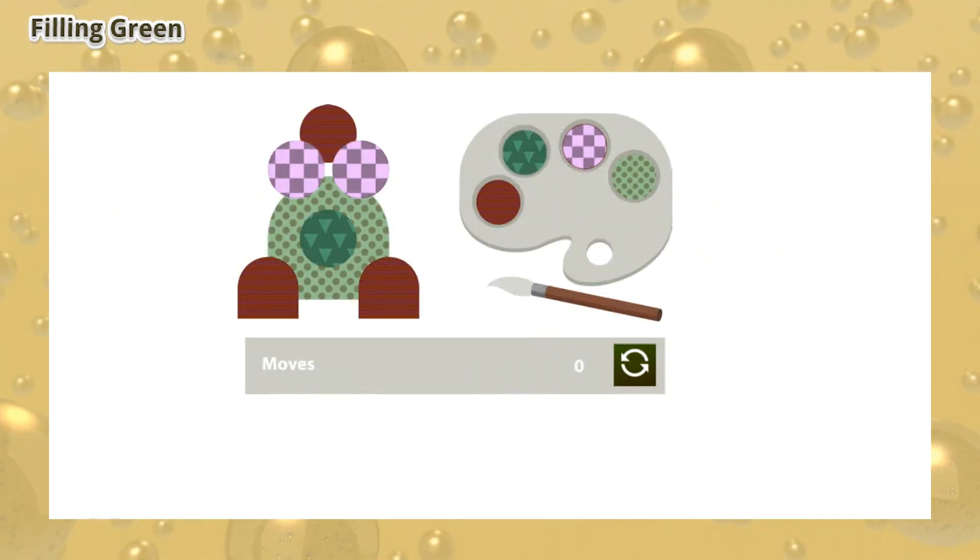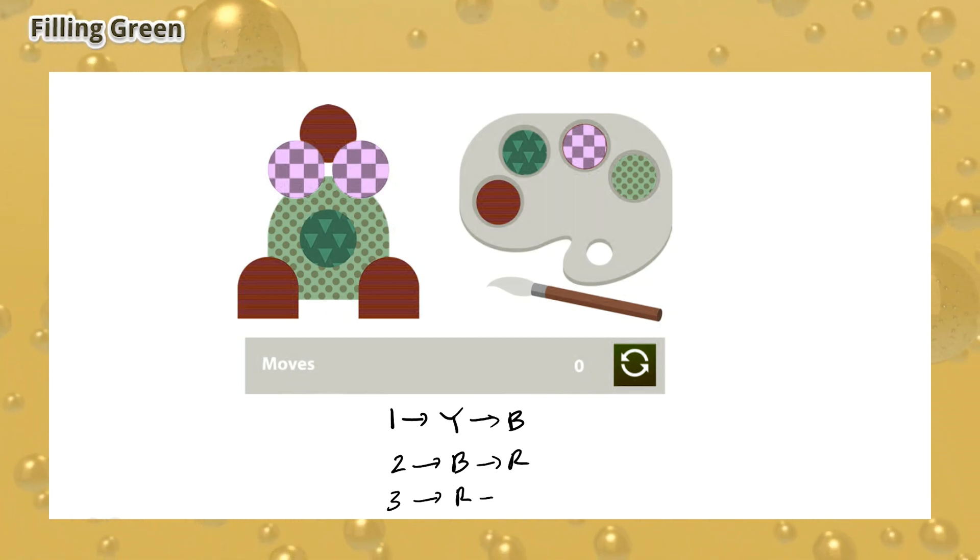First of all, we have to change yellow to blue. We do this to get rid of the yellow colour and make a single blue part. Next, we have to change blue to red to make one single red part. Finally, we change the red to green. This changes the whole thing to green in just 3 moves.